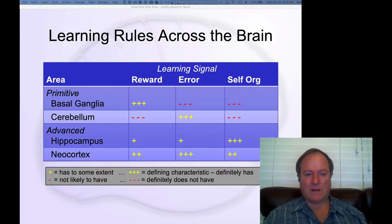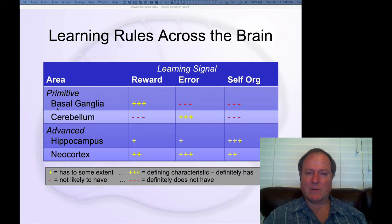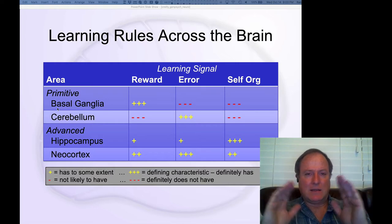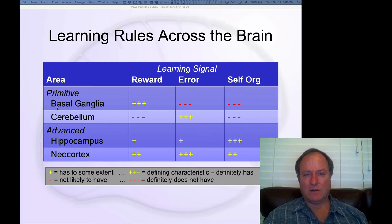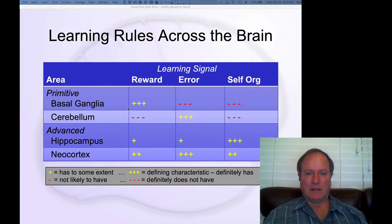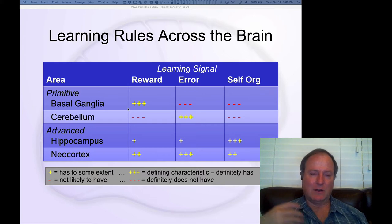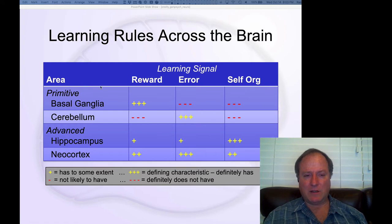We have these core primitive brain areas that are present in most animals — the basal ganglia and the cerebellum — and they neatly organize according to learning principles. The basal ganglia fundamentally learns about reward and reinforcement. Everything about behaviorism, classical conditioning, and instrumental conditioning — learning to do things that lead to reward and avoiding things that lead to punishment — is what the basal ganglia does, using this dopamine reward signal.